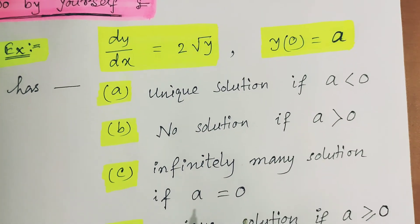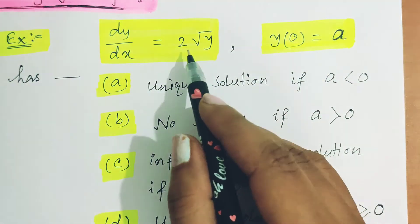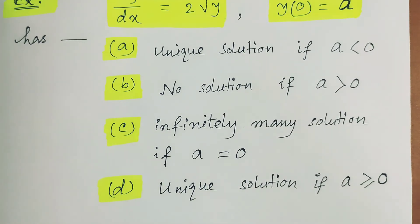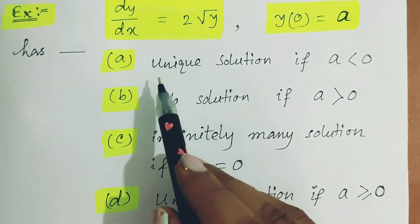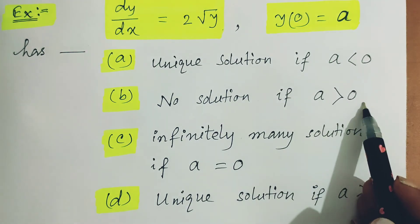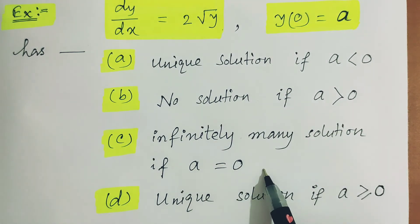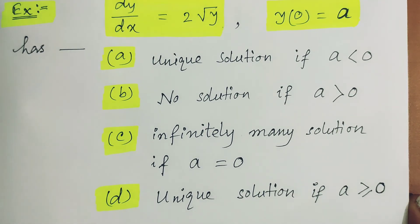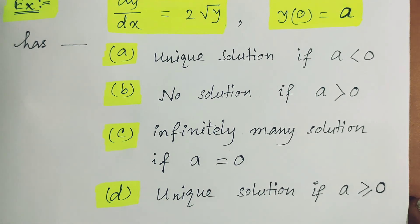Here is a do-it-yourself question: dy/dx = 2√y, with y(0) = a. Among these four conditions, which one is true? (A) Unique solution if a < 0, no solution if a > 0, infinitely many solutions if a = 0; (B) unique solution if a ≥ 0. I hope you understand the existence and uniqueness criterion of the solution of a differential equation. Solve this equation and write the answer in the comment box. Have a nice day, thank you.